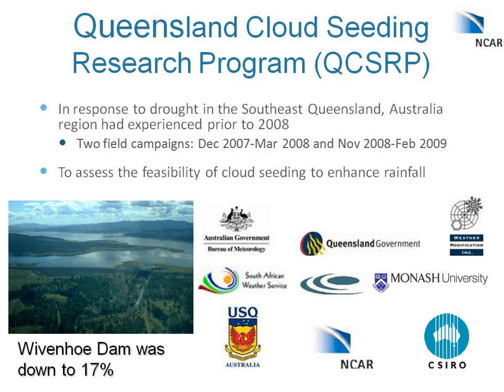As you might be aware, if you've been reading the news, they're now experiencing dramatic flooding. But at the time that we were there, their primary dam for water storage, Wyvernhoe Dam, was down to 17% — it is currently well over 100%. Our mission at the time was to assess the feasibility of cloud seeding to enhance rainfall, and we worked with a variety of partners from within Australia, South Africa, and the U.S.